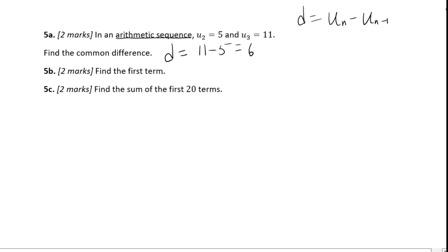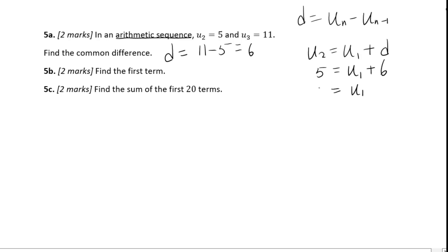5b: Find the first term. For U2, I can write U1 plus d. So 5 equals U1 plus 6, giving U1 equals 5 minus 6, which is negative 1. So U1 equals negative 1.